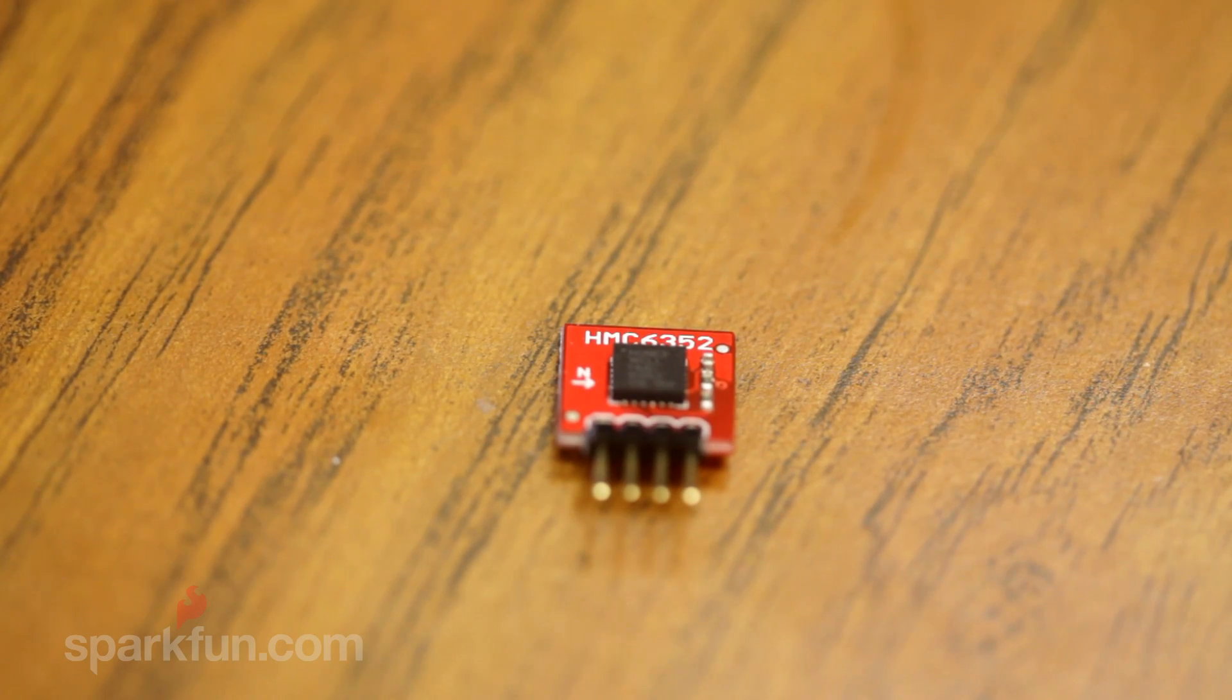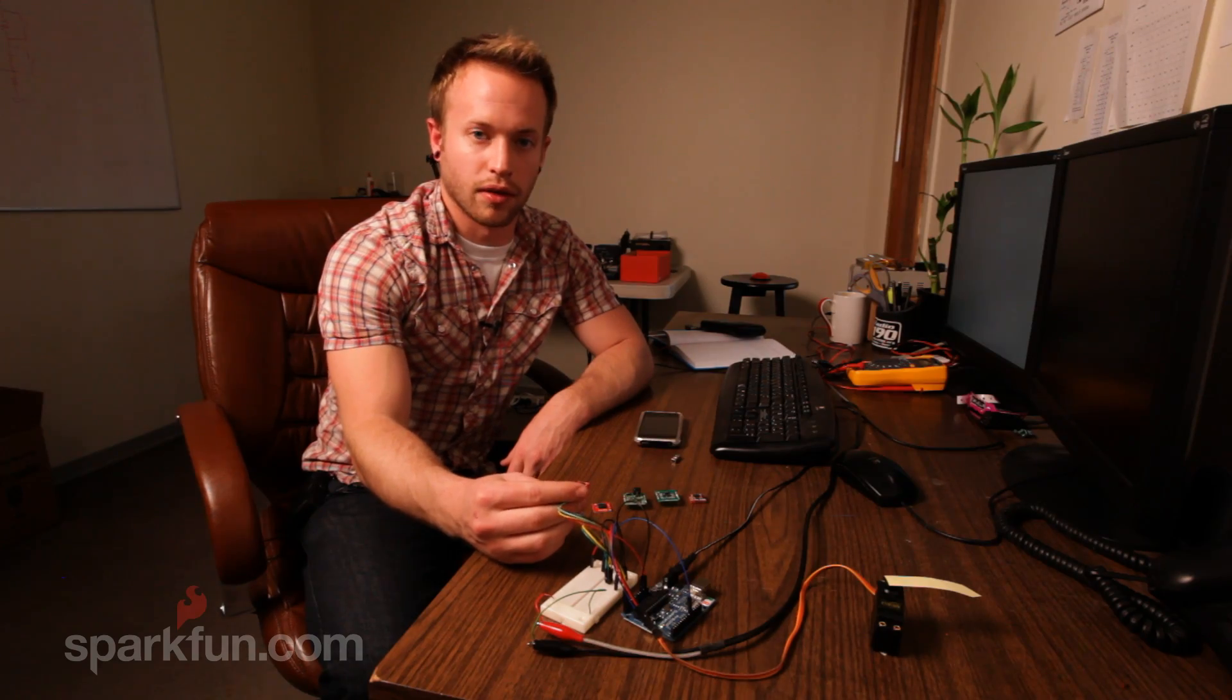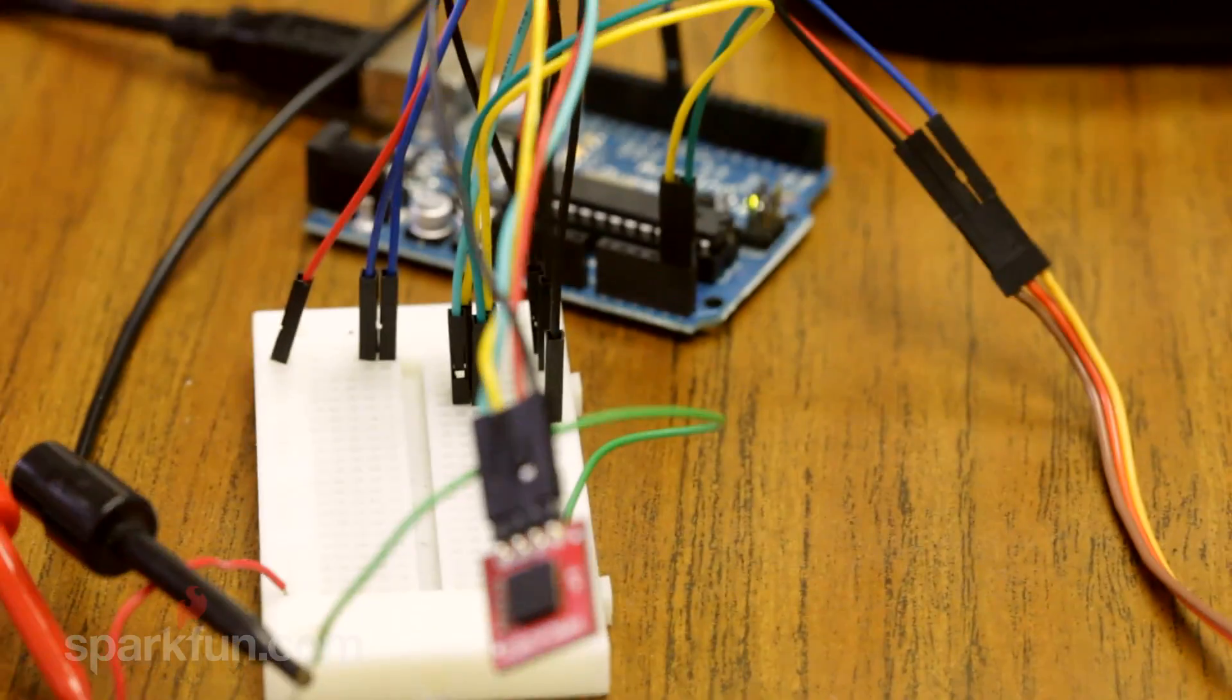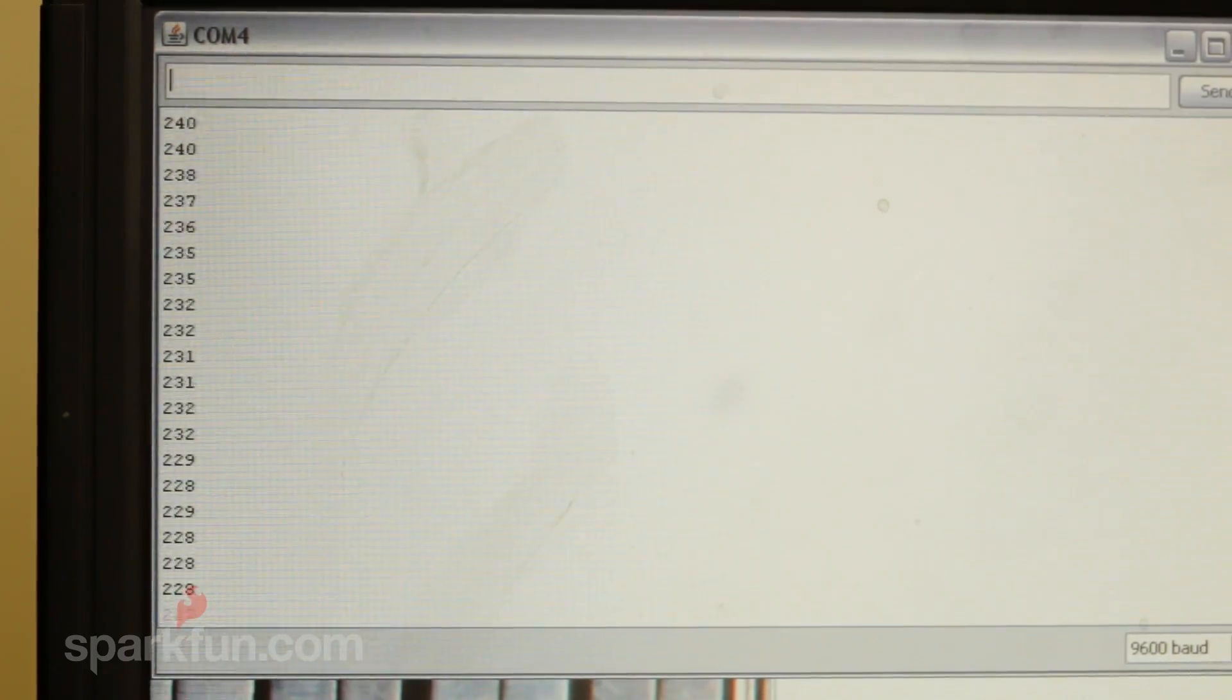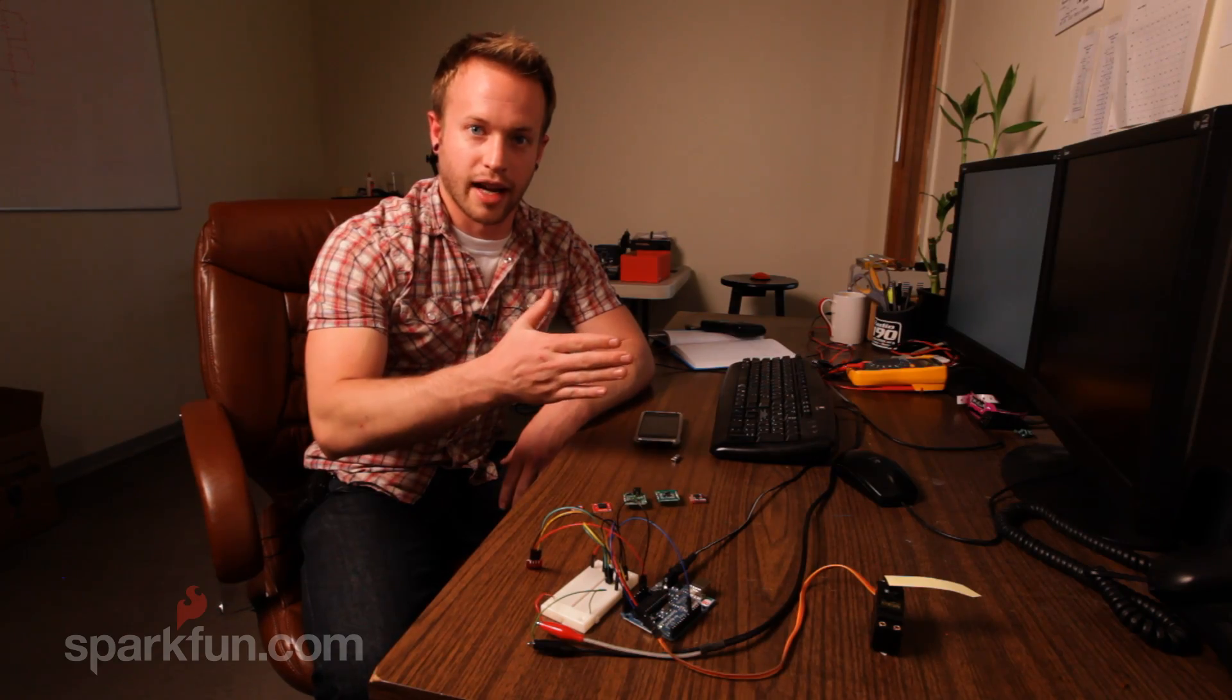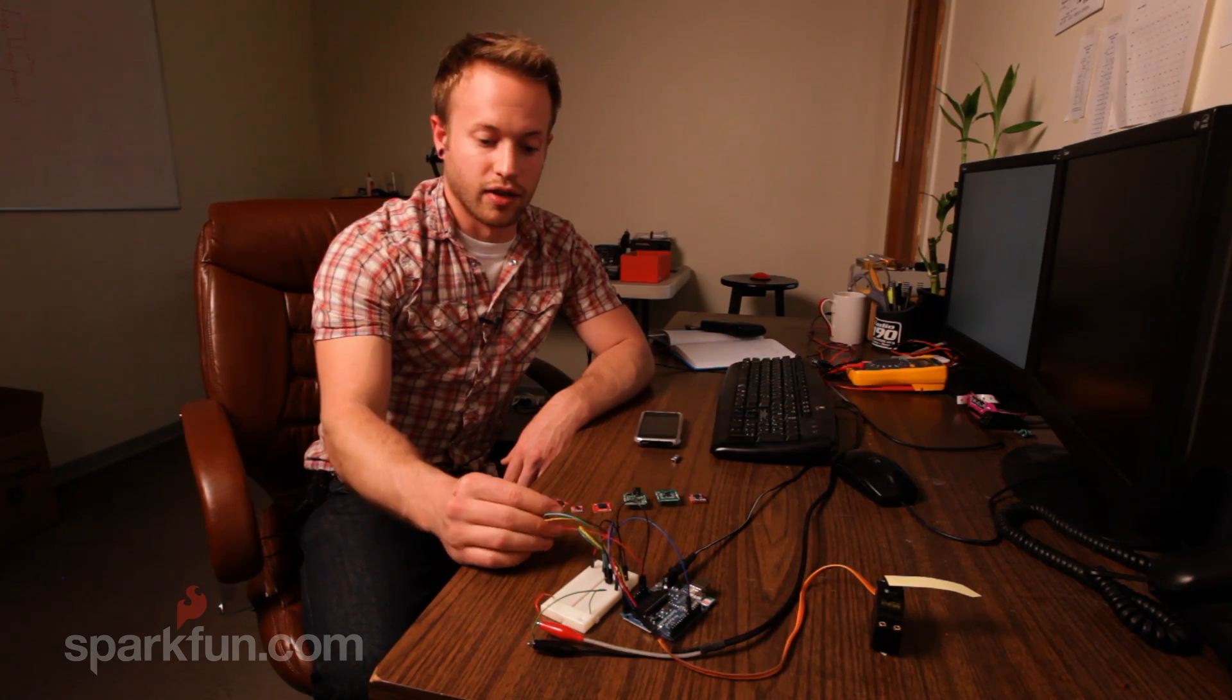The HMC 6352 is detecting north on the two-axis and putting them together, so when it's queried by the Arduino, it sends a heading from 0 to 360, meaning it has one degree accuracy, and it does this at 20 hertz.